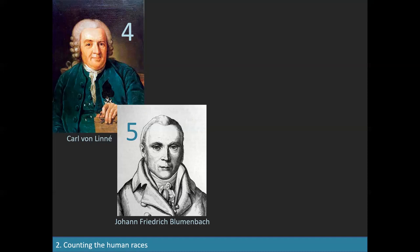Blumenbach concluded that European skulls were the most beautiful. He was not a racist and insisted his classification included no ranking of races — Europeans were simply the most beautiful. Because the finest of those beautiful skulls came from the Caucasus, from Georgia, he invented the term 'Caucasian,' now used as a synonym for European. He then proposed a progressive degeneration from this ideal leading to the American and Asian races, followed by a further degeneration to the African and Australian races.